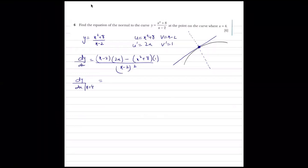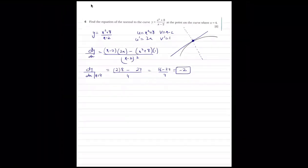The gradient is coming out as minus 2. Is everyone getting minus 2? 16 minus 24 over 4 gives minus 1, which is minus 2. That is the gradient of the curve at x equals to 4. So we know that the gradient of the tangent is also going to be minus 2.